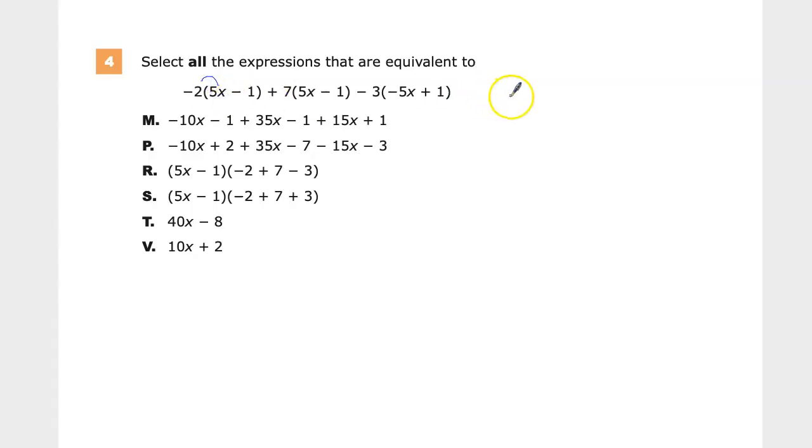So negative 2 times positive 5 is negative 10x. Negative 2 times negative 1—I always treat these, even though I know it's 5x minus 1, I treat it when I'm multiplying as a negative. So negative 2 times negative 1 is positive 2.